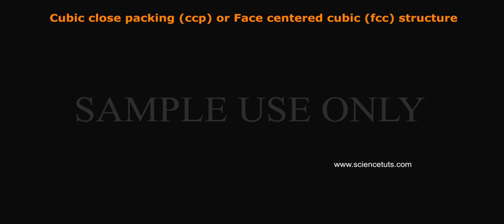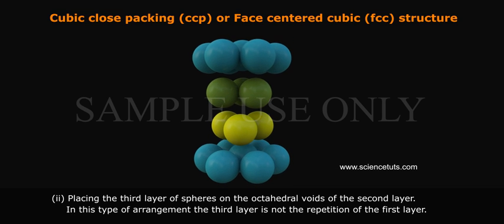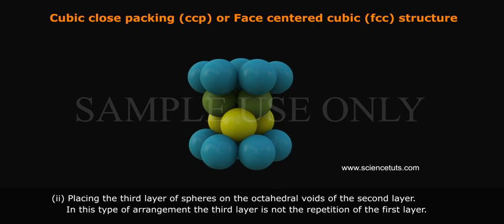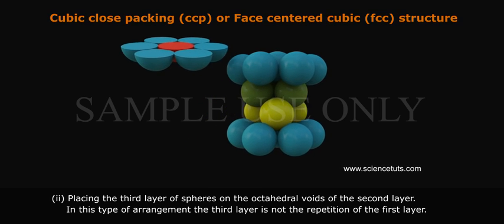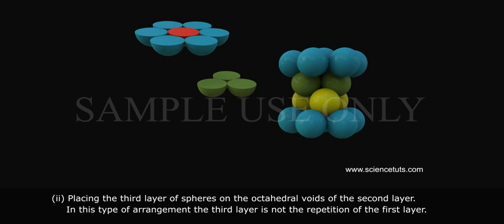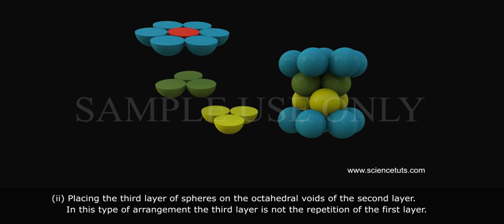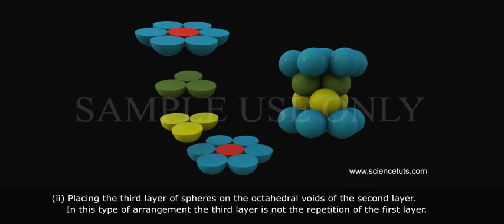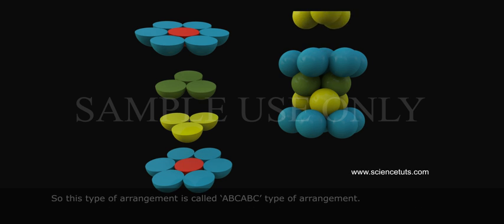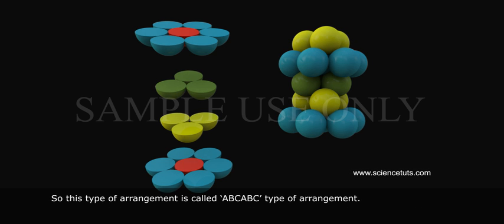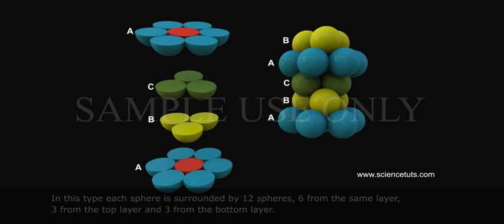Cubic Close Packing or Face Centered Cubic FCC Structure. Second, placing the third layer of spheres on the octahedral voids of the second layer. In this type of arrangement, the third layer is not the repetition of the first layer. So this type of arrangement is called ABC-ABC type of arrangement.